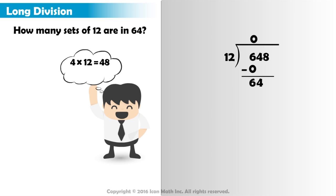To check, we can try 5 times 12, which is equal to 60. Oh, look! We have 5 sets of 12 in 64, not just 4. We write a 5 above the 4 in the 10's place.